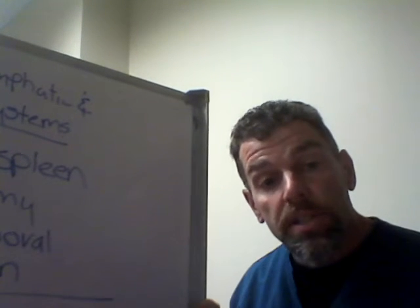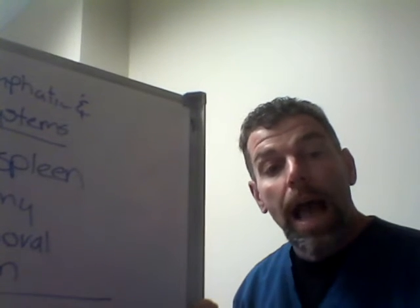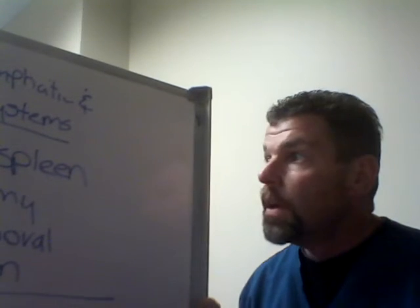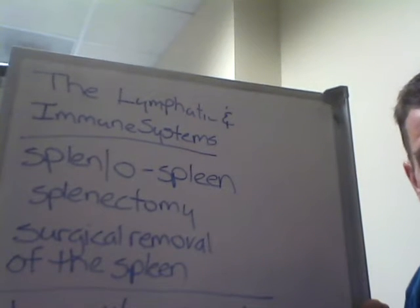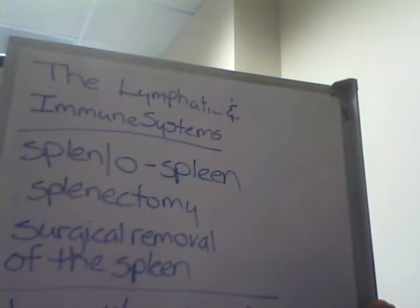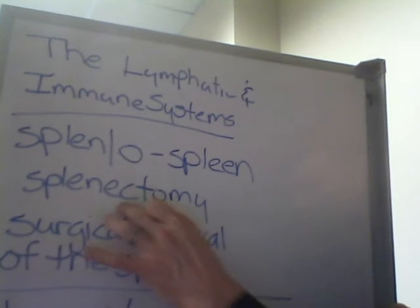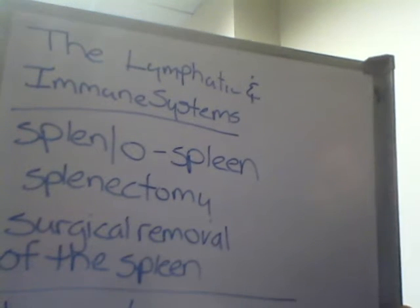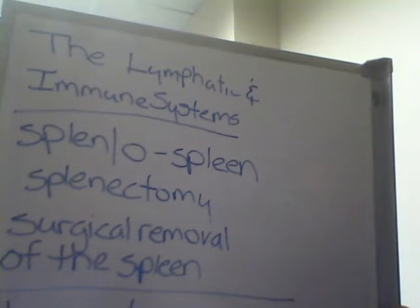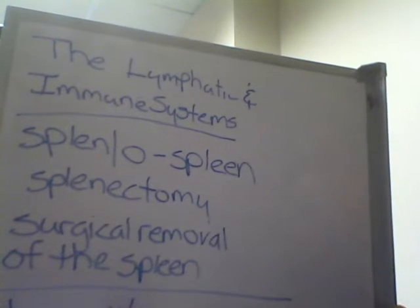So again, it's very interesting that the thymus, this organ of the lymphatic system, actually gets smaller and may even completely disappear as a person reaches adulthood. Concerning medical terminology associated with the lymphatic and immune system: spleno is a combining form that means spleen. We also have the suffix ectomy, which means surgical removal of something. If we combine the suffix ectomy with the combining form spleno, we get splenectomy — the surgical removal of the spleen.